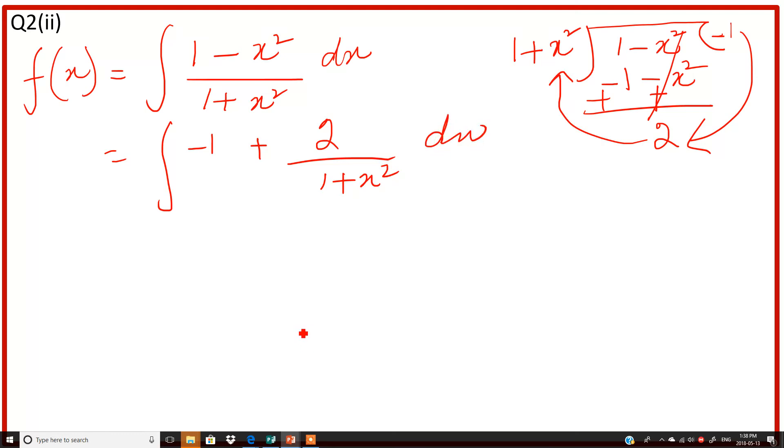We have to integrate individually. We have two terms: the constant -1, and the constant 2 which we write outside the integral sign. So we have the integral of -1 dx plus 2 times the integral of 1/(1 + x²) dx.